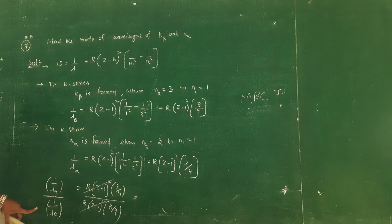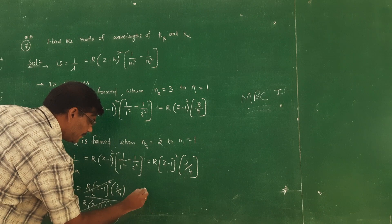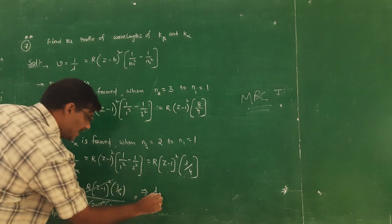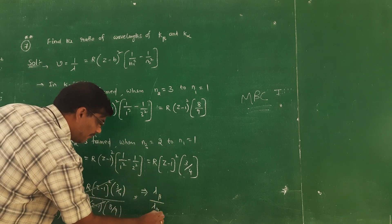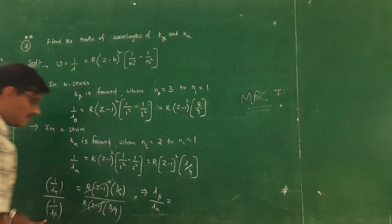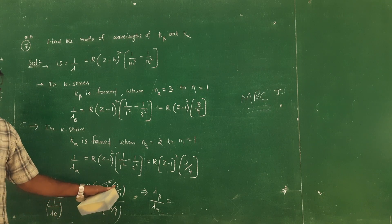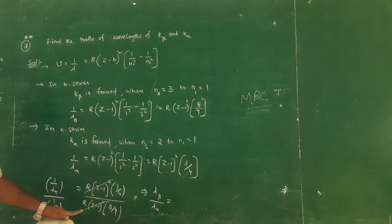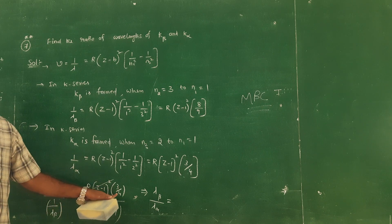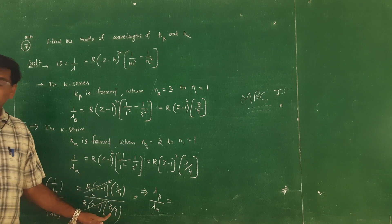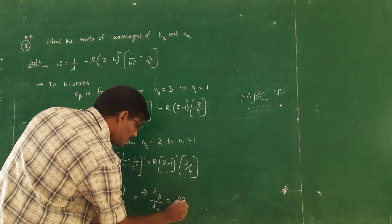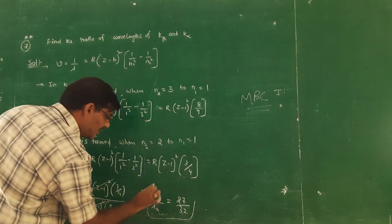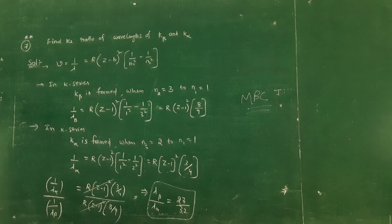1 beta by lambda alpha is equal to 9 by 3 squared, 4 by 8 — lambda beta by lambda alpha equal to 27 by 30.